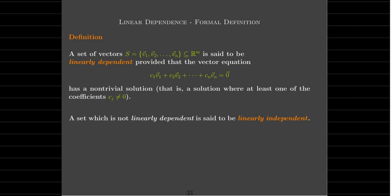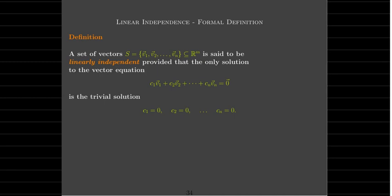Any set which is not linearly dependent is linearly independent. A set of n vectors is linearly independent if the dependence equation only has the trivial solution — the only way to get a linear combination of the vectors equal to the zero vector is if all coefficients are zero. A direct consequence is that none of these vectors can be written as a linear combination of the remaining vectors; each vector contributes some new independent direction information.